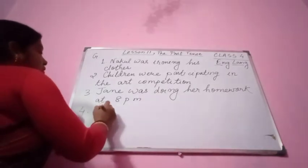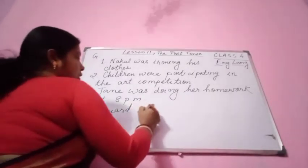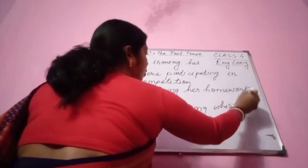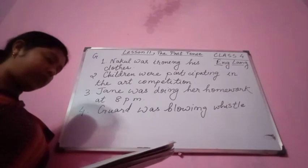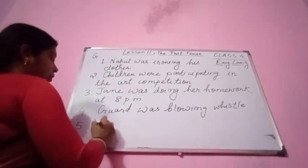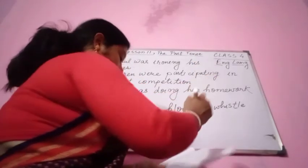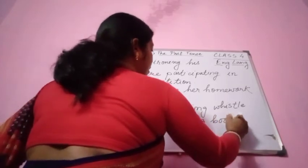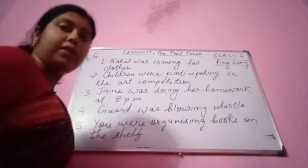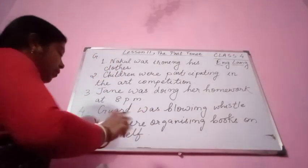Number four: 'God blow whistle.' God is also a singular subject, so: God was blowing the whistle. Number five: 'You organize books shelf.' You were organizing books on the shelf. As you know, with 'you' we always use 'were': you were organizing books on the shelf.